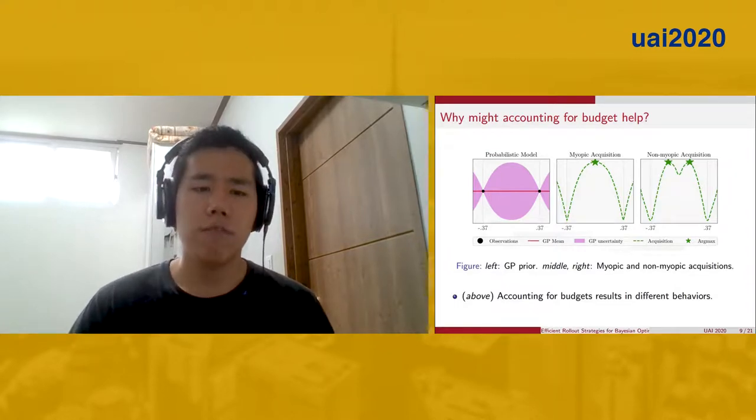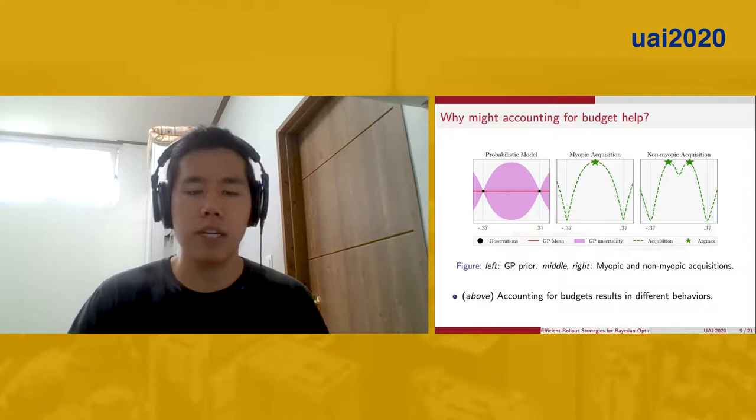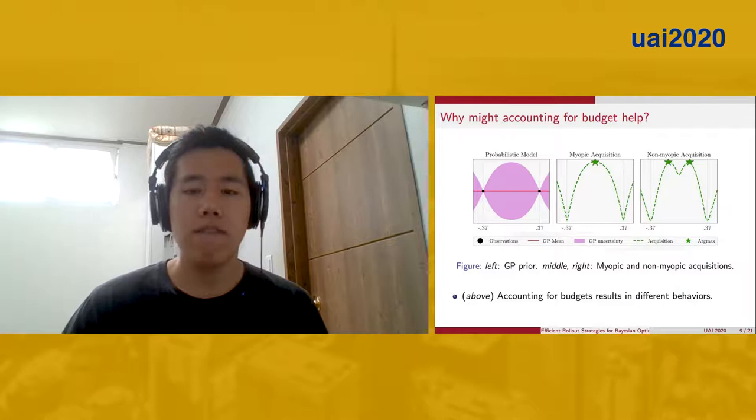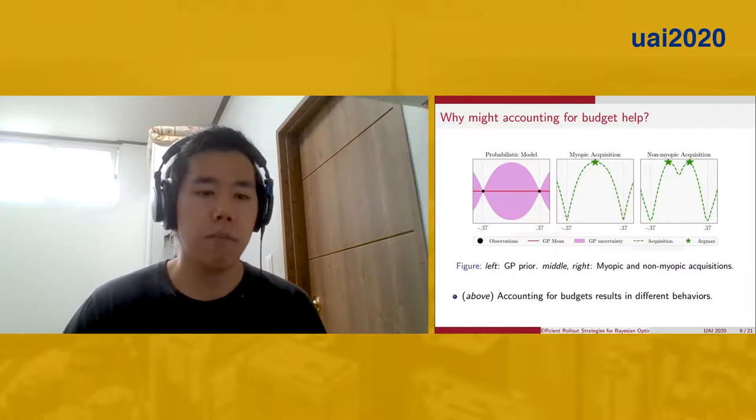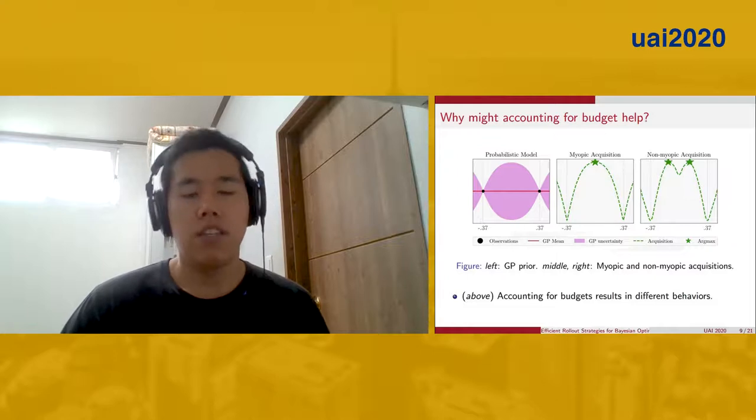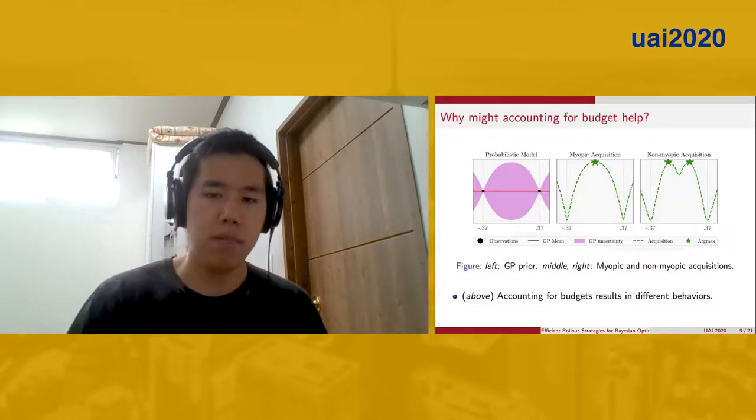Why does accounting for budget help? Here's a classic toy example in which we know next to nothing about the objective itself. We compare BO with a budget of one and two, respectively, in the middle and in the right. If you have a budget of one, the logical thing to do is evaluate at the origin, at the middle of the domain. This is, in fact, what expected improvement in the middle tells you to do.